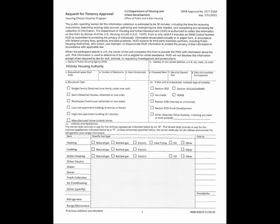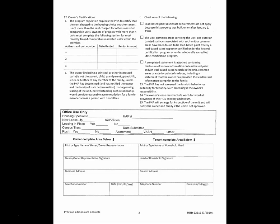Once the WHA receives the RFTA packet for the unit you are interested in renting, the Housing Specialist will determine if you are qualified for the unit. The packet will be processed and given to the inspector. The WHA inspector will contact the landlord to schedule an initial inspection. The time on your voucher stops once an RFTA packet is turned in to the Housing Authority. Only one packet can be processed at a time.